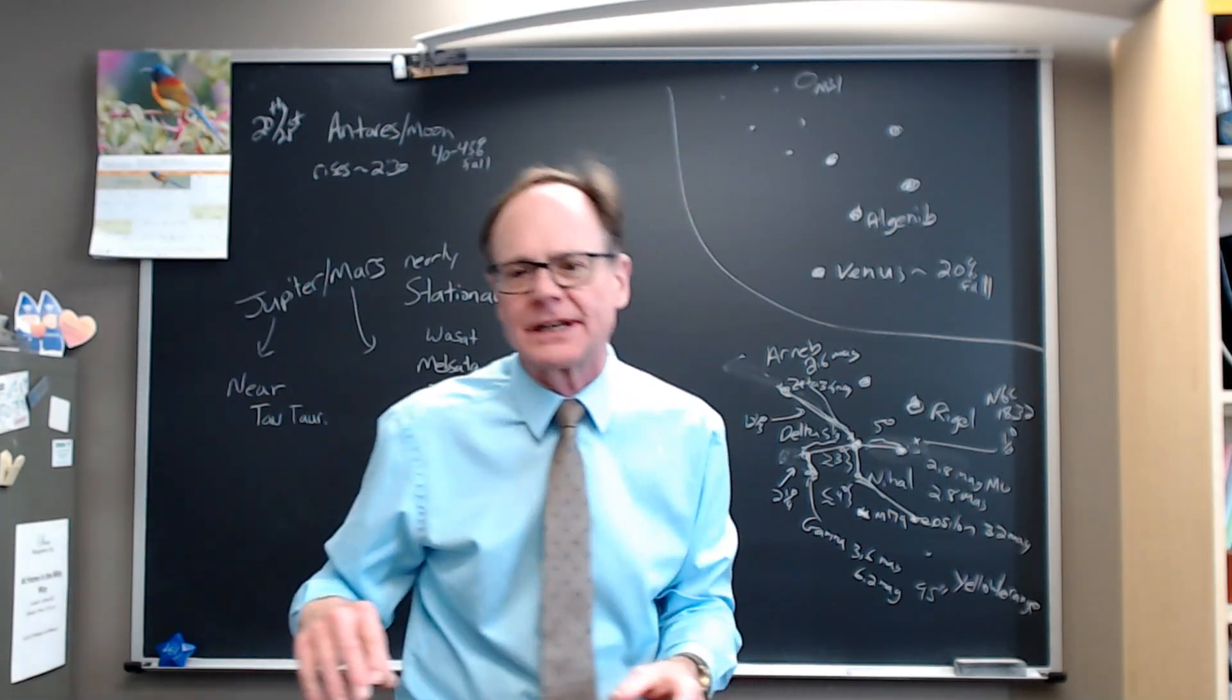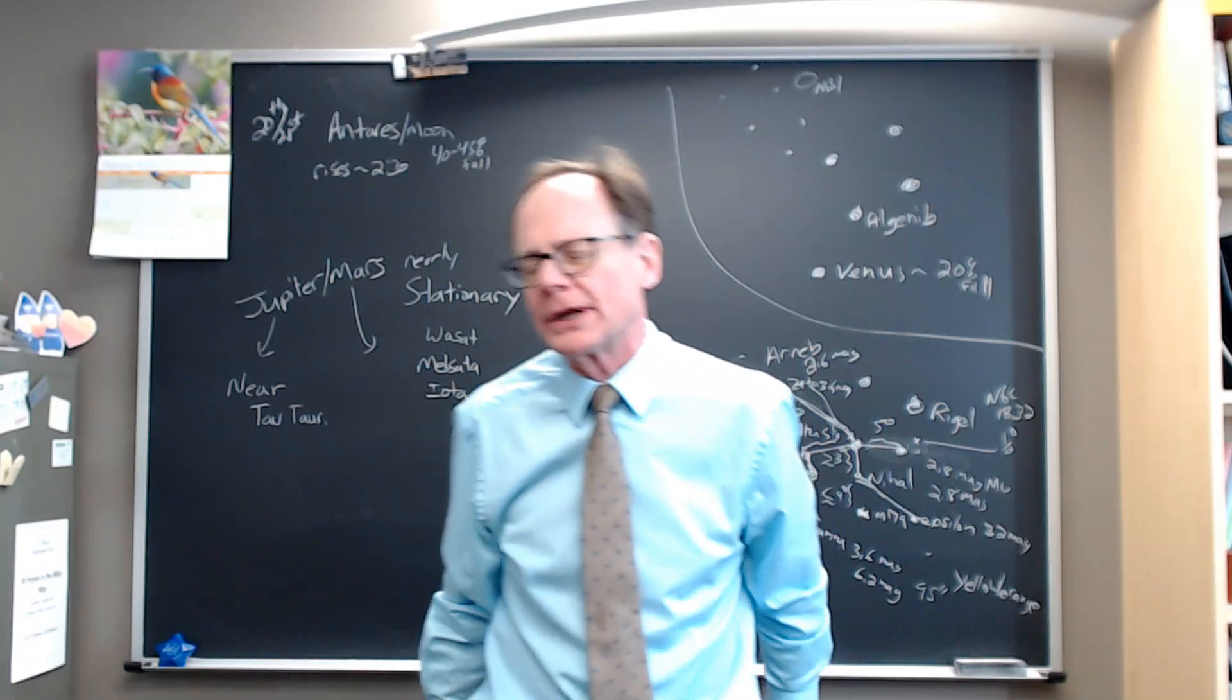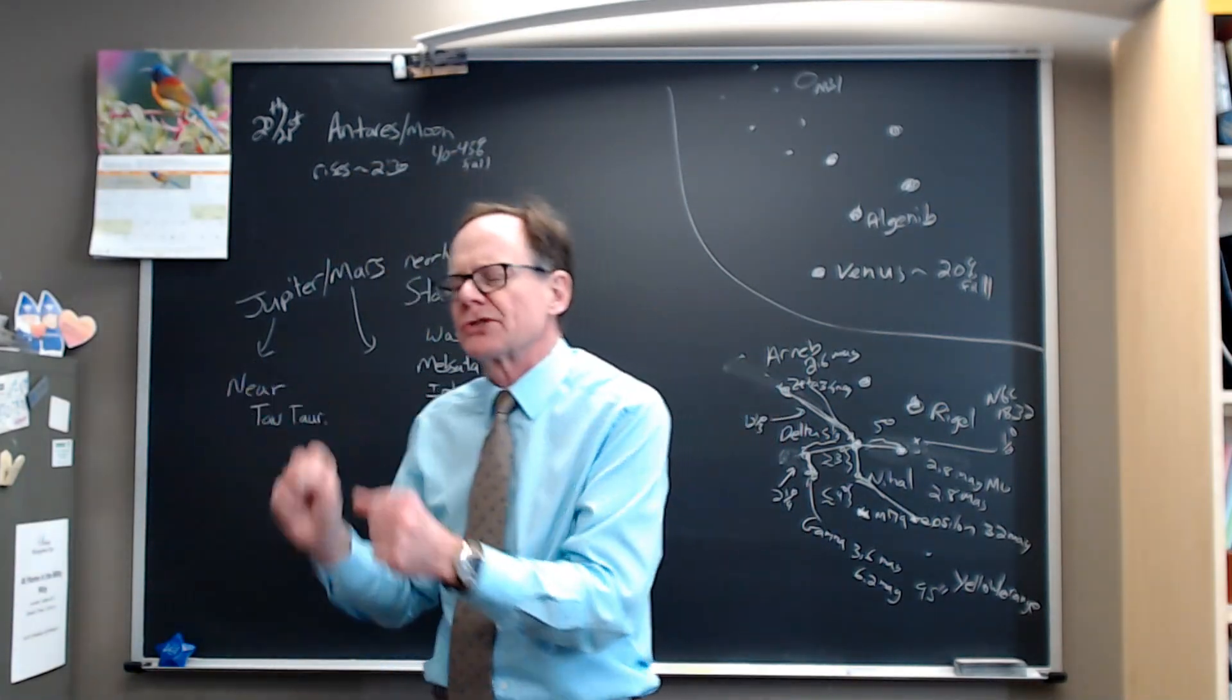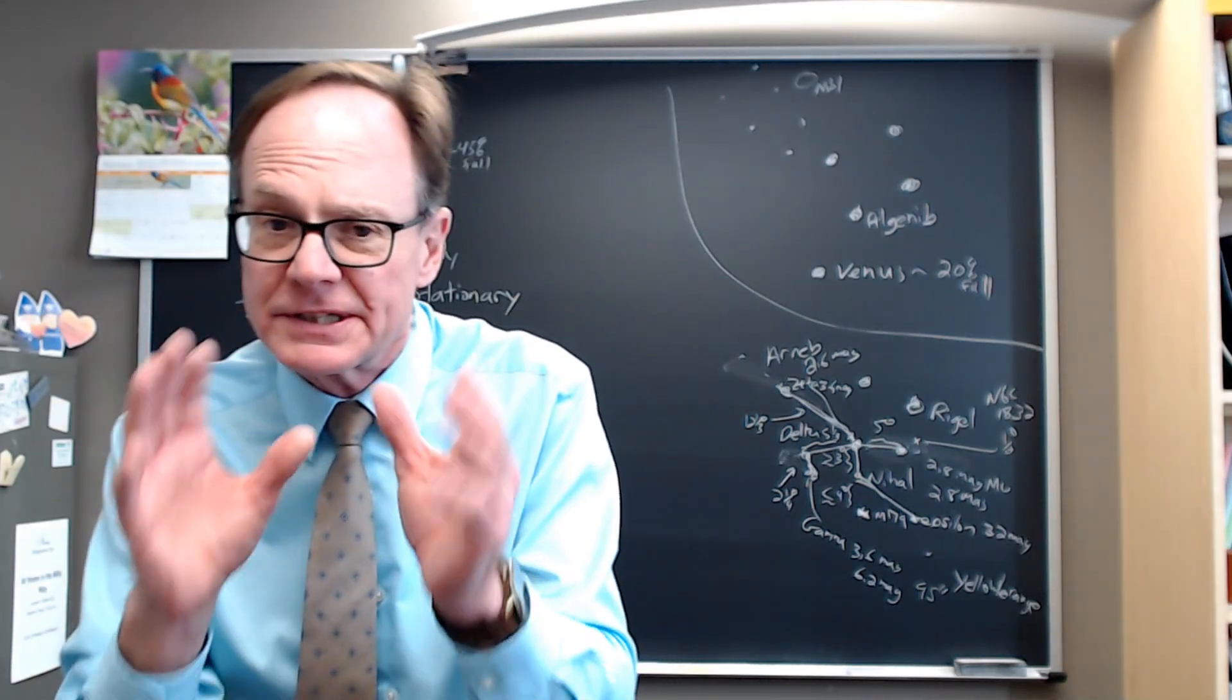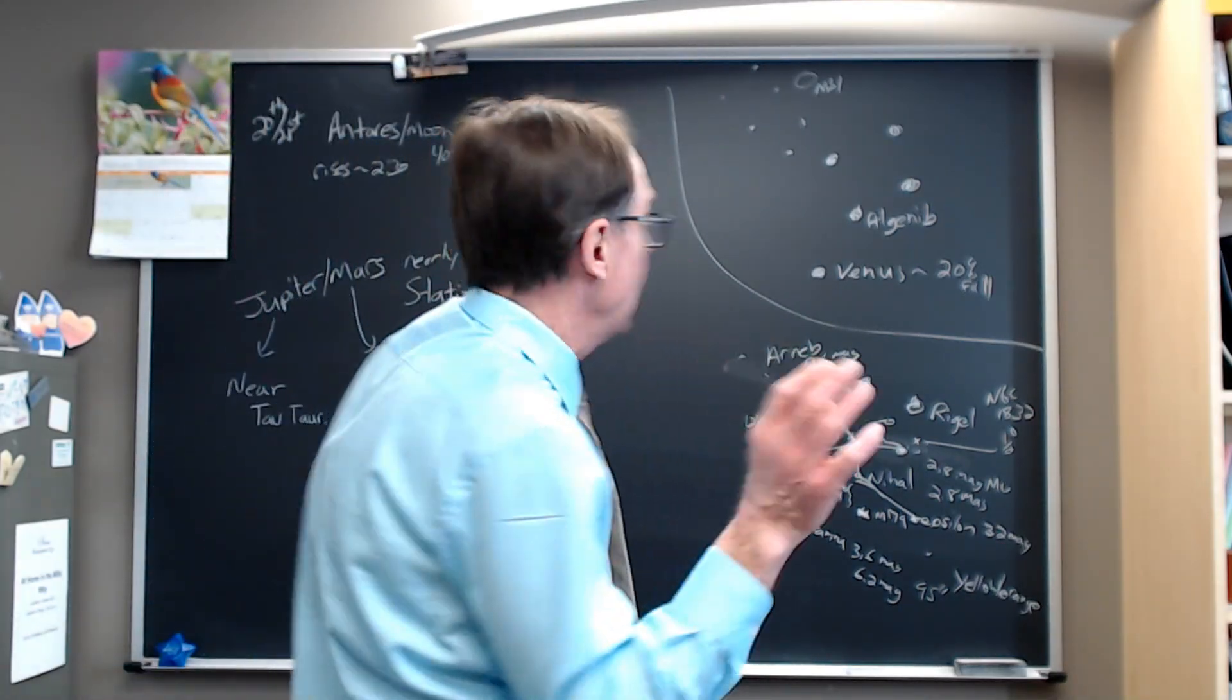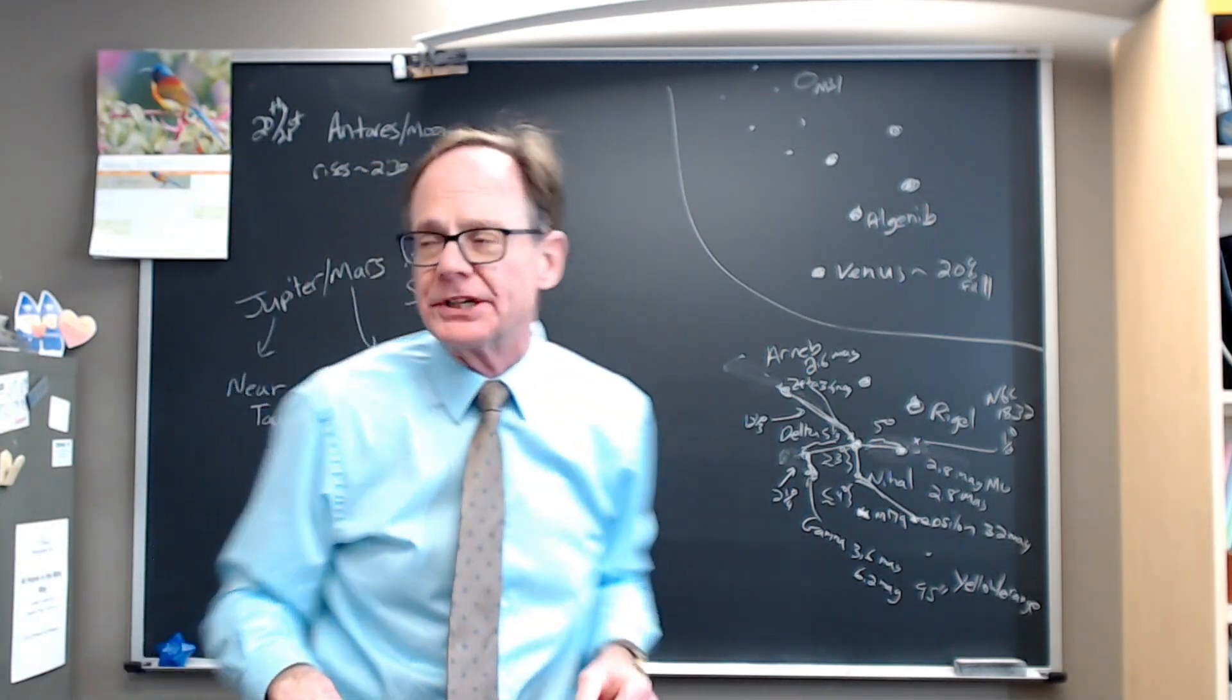Antares is in the heart of Scorpius. We think of this as a summertime constellation, so the fact that we see this region rising at 2:30 in the morning right now tells us we've made the transition to a real spring sky that's going to become the summer sky as it rises earlier and earlier each month.